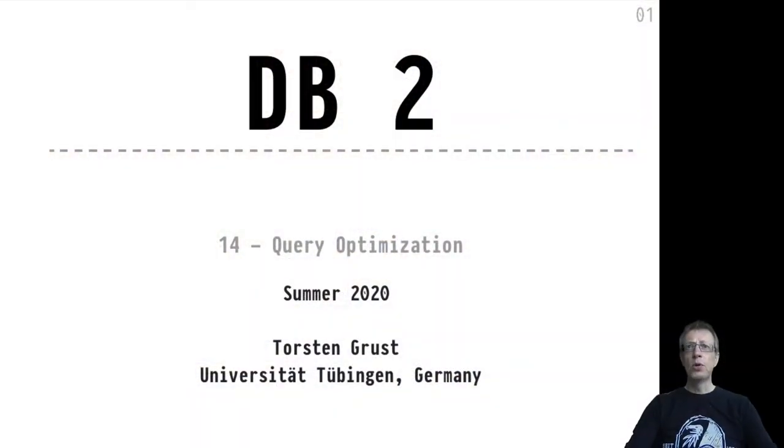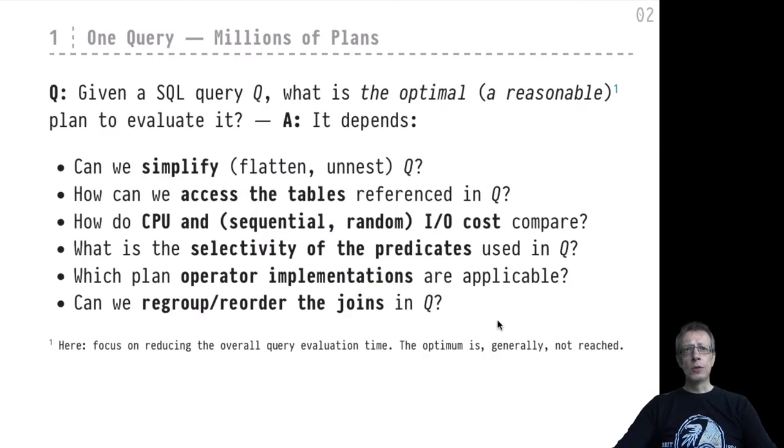Query optimization is the defining component of a relational database system, or of database technology in general. Without query optimization, we would find ourselves piecing together minuscule plan parts, taking into account whether an index is present or not, formulating queries in particular ways that would take days and ages — and we would probably end up with inferior plans. So query optimization warrants a closer look, and that's exactly what we'll do in the upcoming videos.